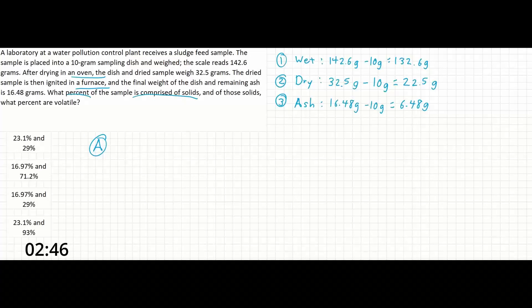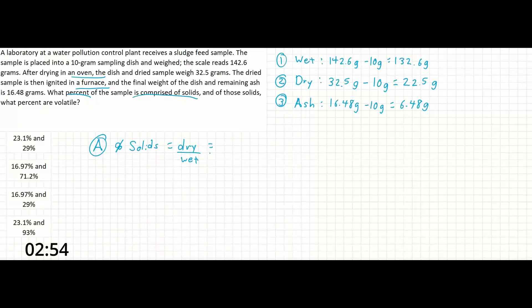The percent of the solids is simply found by finding the ratio of dry to wet sample. So since we've already calculated these, we can just plug them right in. 22.5 over 132.6. And our result is going to be 0.17 or 17 percent.